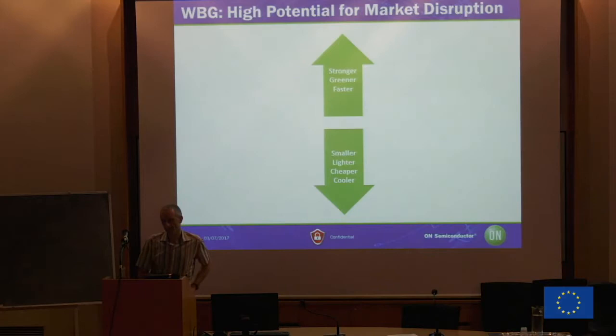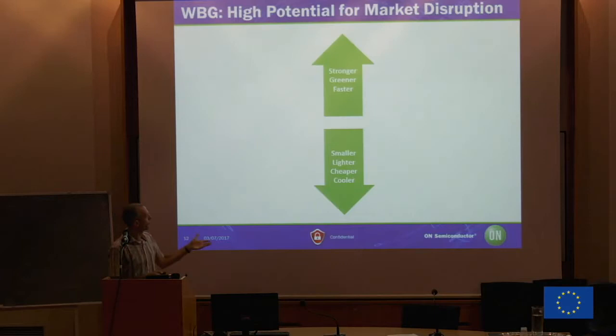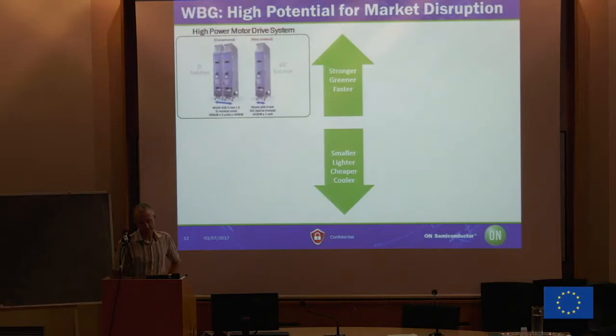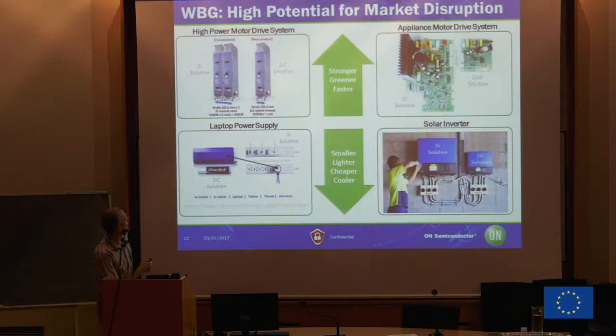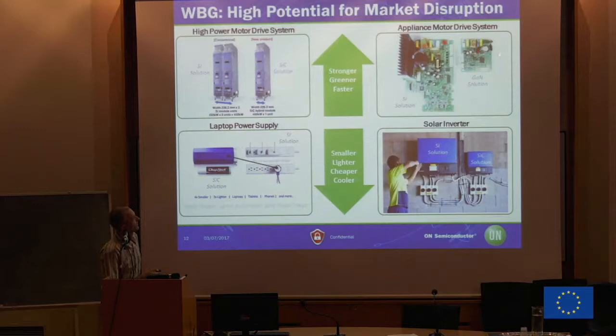There is a push from society to make things greener, stronger, faster, cheaper, and lighter. Here are some examples. This is a high-powered motor drive — this is how it looks with silicon, this is how it looks with silicon carbide. This is a solar inverter — you see how much it shrinks down. This is a motor drive for appliances with silicon, and this is with gallium nitride. All these new materials offer size reduction, weight reduction, and lower bill of materials, simply because they run more efficiently.